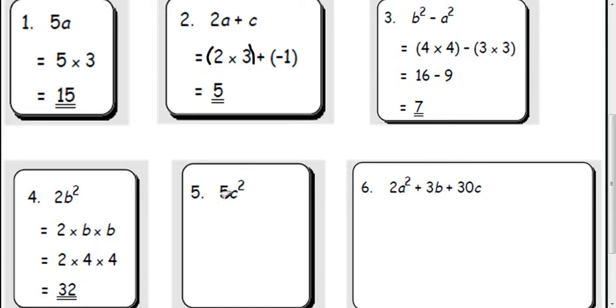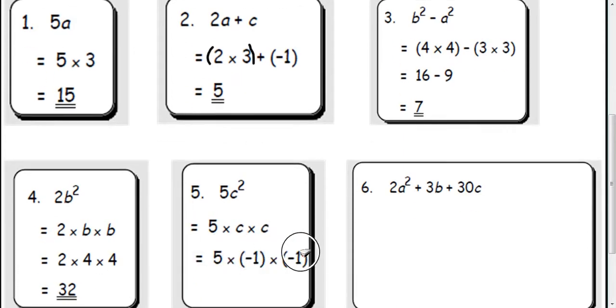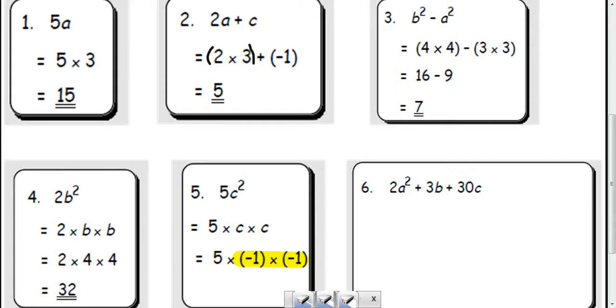This is exactly the same. It's 5 lots of C squared. So 5 times C times C. And up here we've got negative 1 for C. So it's 5 times negative 1 times negative 1. It doesn't really matter which order you do this in. I am going to choose to do negative 1 times negative 1. Remember, if the signs are the same when you're multiplying integers, then it's always a positive answer. So that's going to come to 1 times 5, which is 5. You could have also done 5 times negative 1 first and got negative 5 and times that by negative 1 and get plus 5.